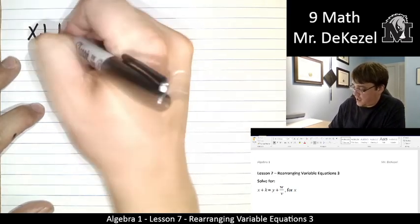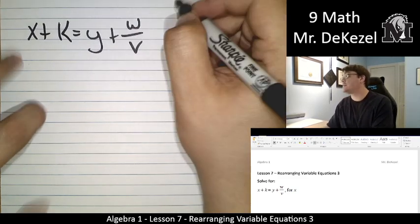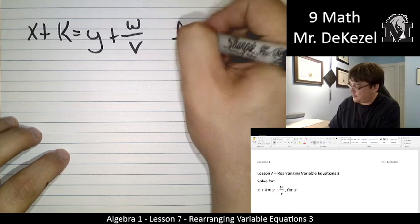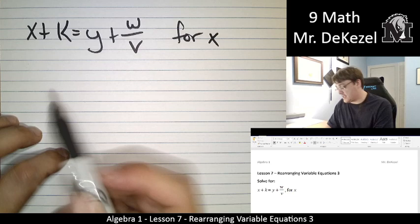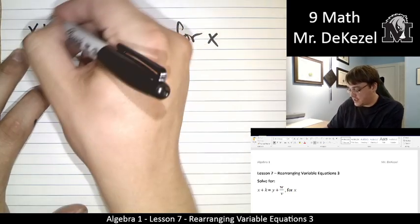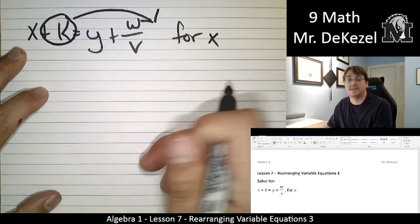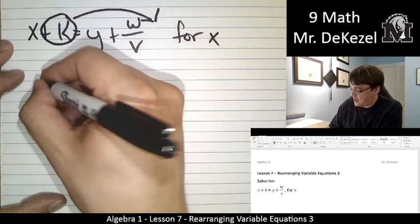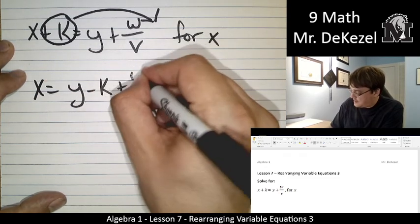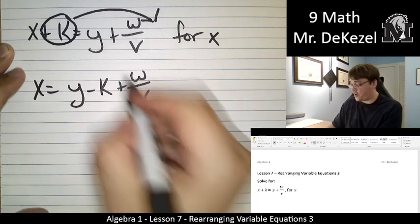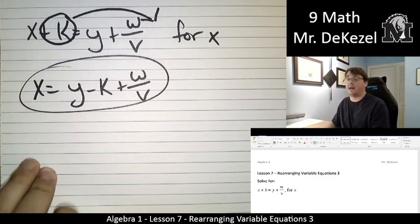And the first one I think is kind of easy, but that's okay. x is here. We're going to take the positive k and move it to the other side so we can get x all by itself. That means it's negative on that side. So that is x is equal to y minus k plus w over v. And we've solved for x. It's all by itself on that side. We should pat ourselves on the back for that hard work.